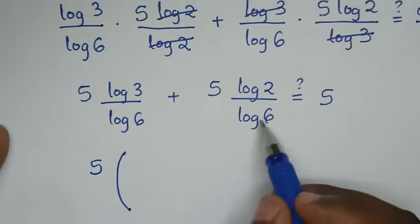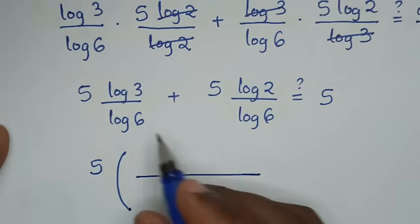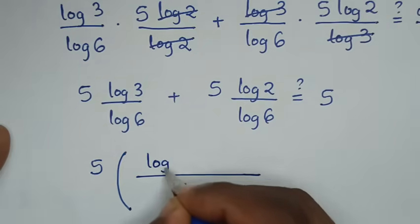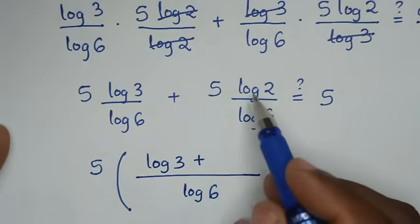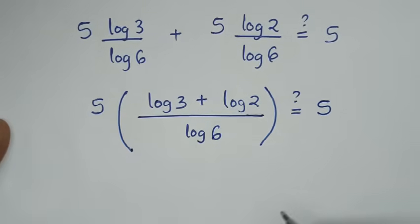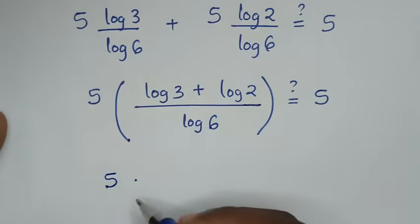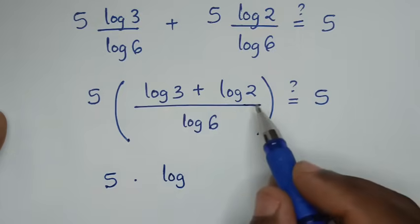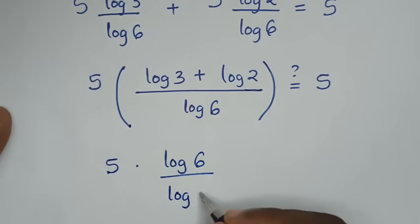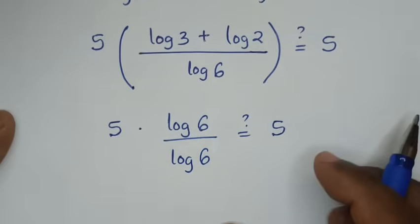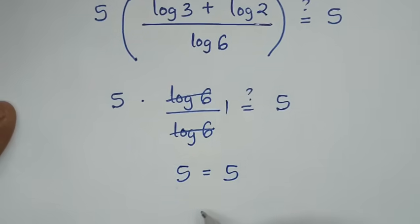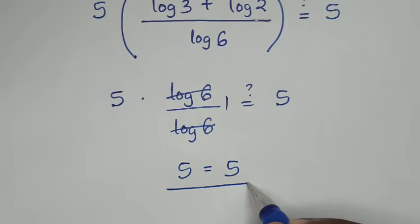Now log of 2 cancels log of 2, and log of 3 cancels log of 3. This gives 5 log of 3 over log of 6 plus 5 log of 2 over log of 6 equals 5. Factor out 5: we get 5 times the bracket log of 3 plus log of 2 over log of 6. Since log of 3 plus log of 2 equals log of 6, this becomes 5 times log of 6 over log of 6, which is 5 times 1, equals 5. Left side equals right side, confirming the answer is correct.